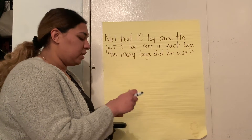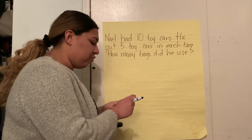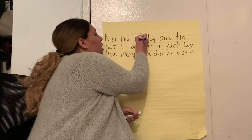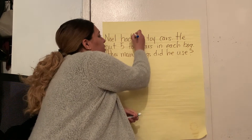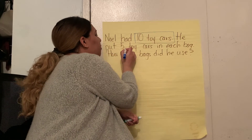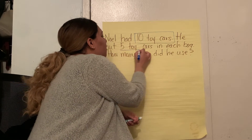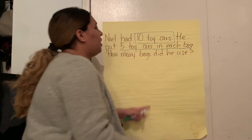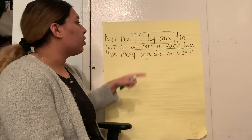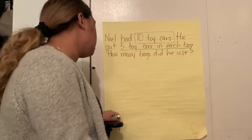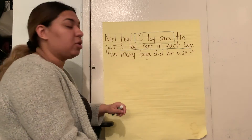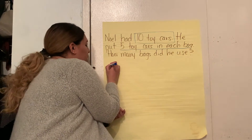Alrighty friends, so let's go ahead and read. Noel had 10 toy cars and he put 5 toy cars in each bag. Let's think about what we're going to do first. We're going to draw 10 toy cars by representing them with 10 circles and labels. Get ready and count with me.